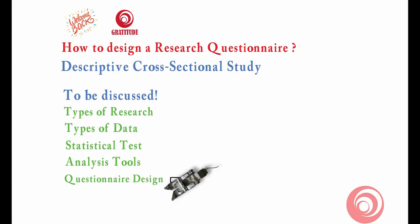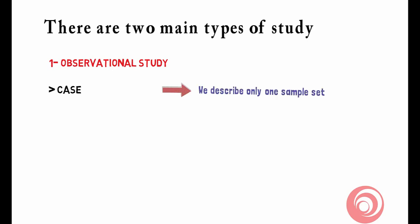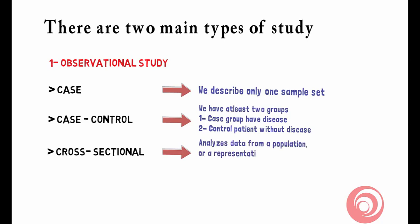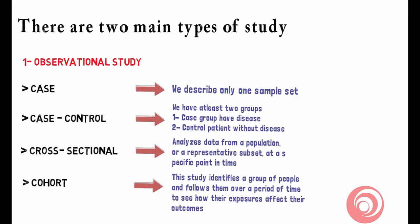Basically there are two main types of study. Number one is observational study. In the observational study we have the case, where we describe only one sample set. Then we have case-control, where we have at least two subsets — one with the disease and one without. Cross-sectional study, the most important topic in our video, analyzes the data from a population or a representative subset at a specific point in time. Then there is the cohort study, where we watch over time — we follow a group of people over a period of time to see how their exposure affects their outcomes.